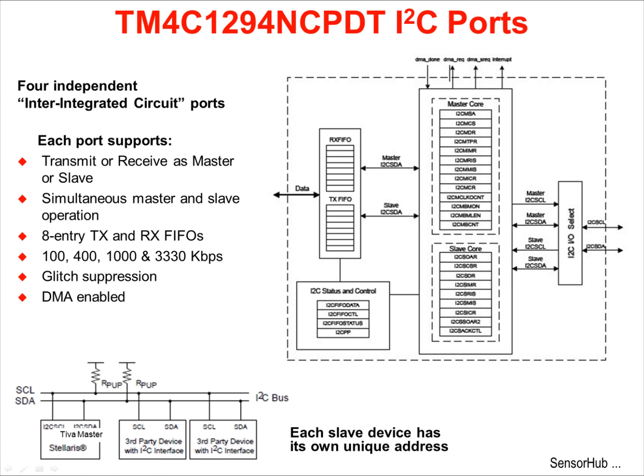The TM4C1294NCPDT has four independent I2C ports. Each port supports being a transmitter or receiver in both master and slave modes. Simultaneous master and slave operation is supported. Both the transmit and receive FIFOs are eight entries deep. Operational speeds are 100, 400, 1000, and 3330 kilobits per second.